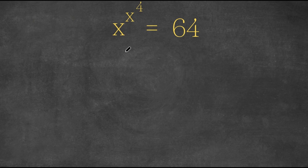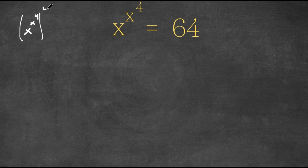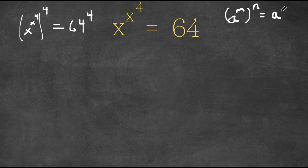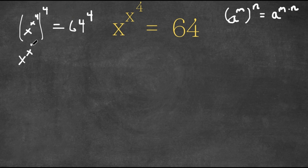So what I'm first going to do is I'm going to take the fourth power on both sides. So we have x to the power of x to the power of 4, now to the power of 4, equals 64 to the power of 4. Using the property that a to the power of m to the power of n equals a to the power of m times n, this can also be written as x to the power of x to the power of 4 times 4, and this equals 64 to the power of 4.